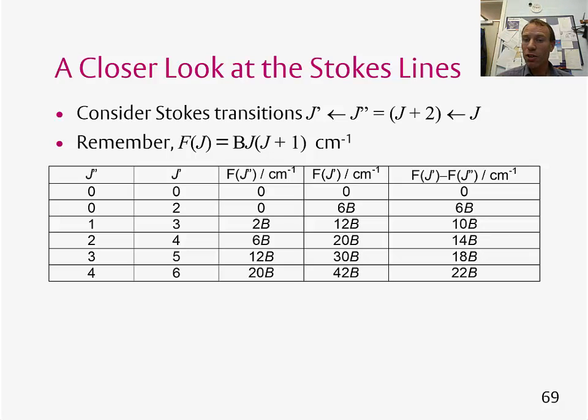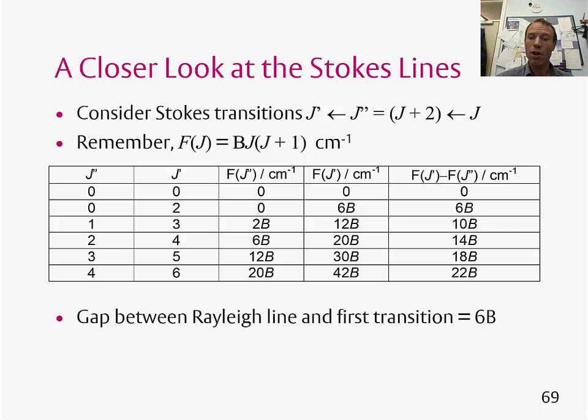So if we look at these values, we can see between the Rayleigh peak and the first peak in the Stokes band, there's a gap of 6B, whereas between all subsequent peaks, there's a gap of 4B.